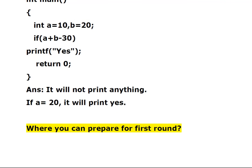Suppose A equals 20: A plus B equals 40, and 40 minus 30 equals 10, so it will print S. What if A equals 0? Then A plus B will be 20, and 20 minus 30 equals minus 10. So the if condition evaluates to minus 10, which is not 0, so it will print S. Any non-zero value in the if condition means it will execute and print.